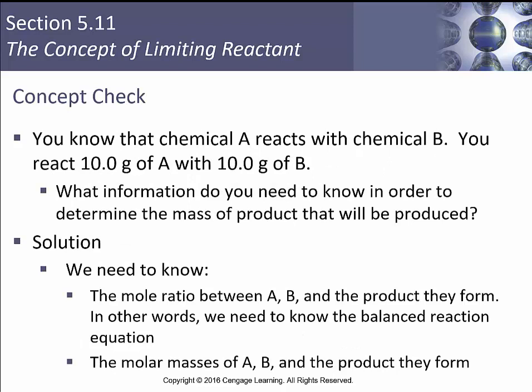You know that chemical A reacts with chemical B. You can react 10 grams of A with 10 grams of B. What information do you need to know in order to determine the mass of the product that will be produced? You need to know the mole ratio between A and B, which comes from your balanced chemical equation. You're also going to need to know the ratio of A and B with your product — also from your balanced chemical equation. You need to know the molar masses of A, B, and P (the product). You'll definitely need moles of A and moles of B and a balanced chemical equation to do anything involving both A and B.